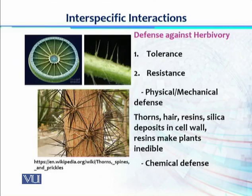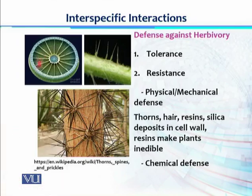The second strategy is resistance. Plants have either physical or mechanical defense in the form of thorns, hair, and resins. Silica deposits in the cell wall and resins make plants inedible or mechanically indigestible, saving them from being over-consumed by herbivores. The presence of silica in the cell wall makes plant material inedible for herbivores, allowing these plants to defend themselves against herbivory.